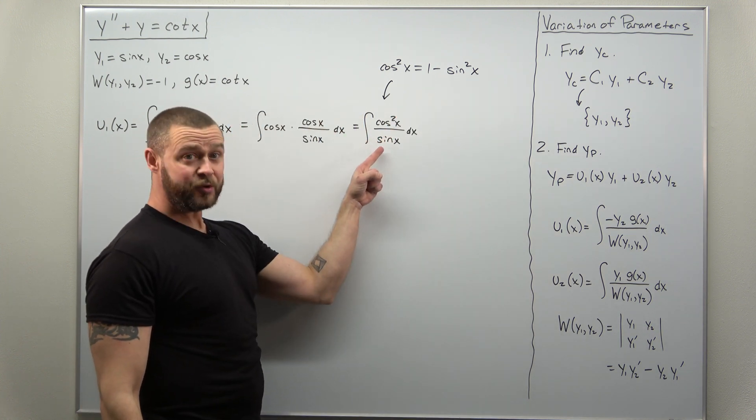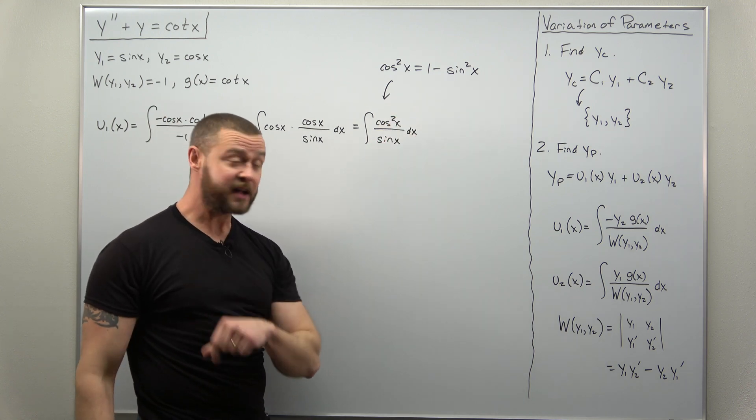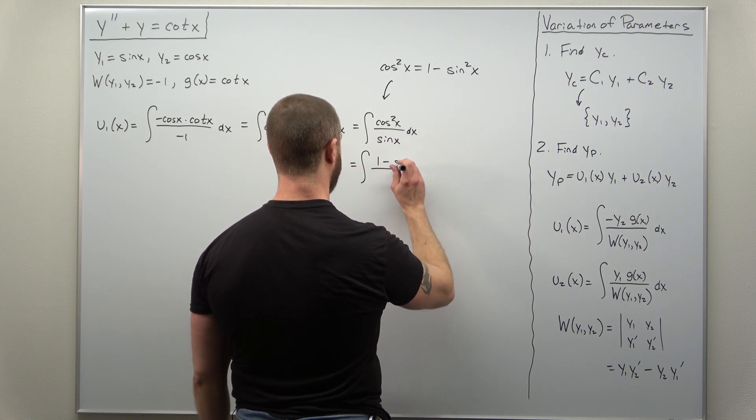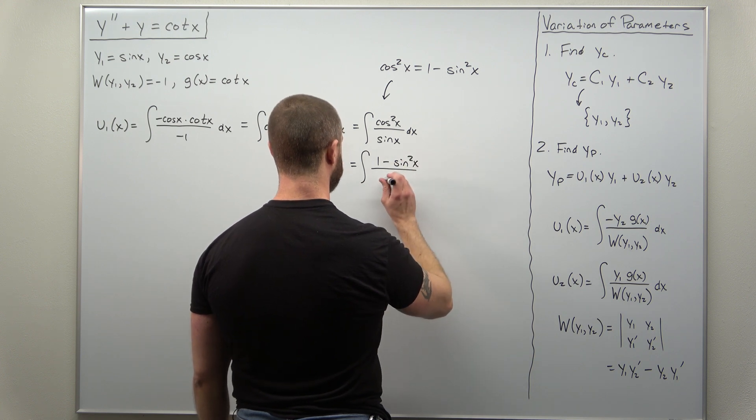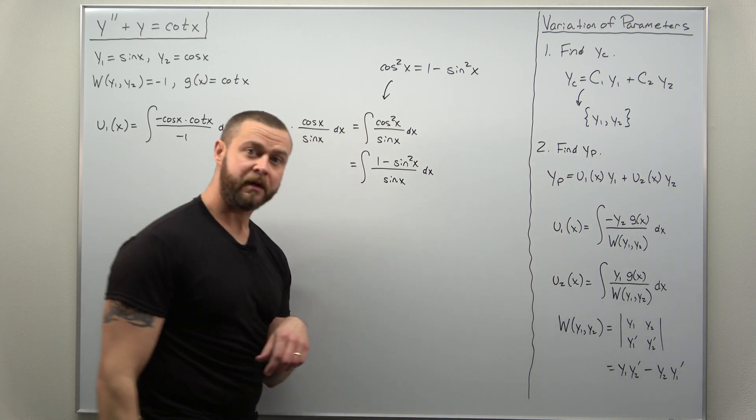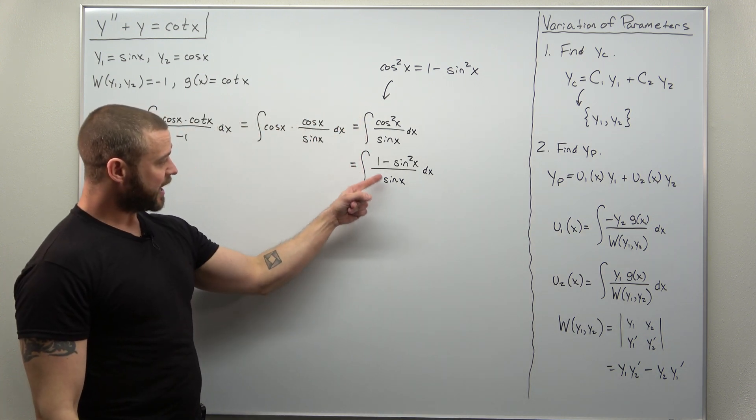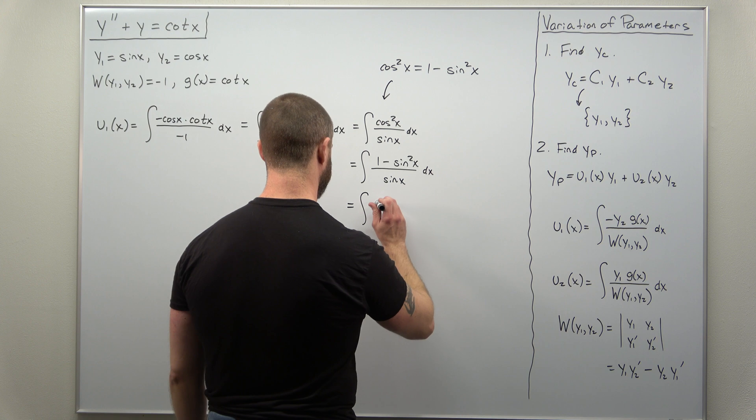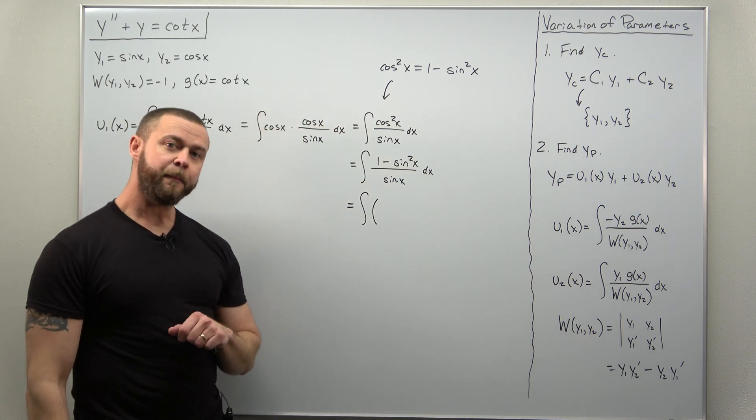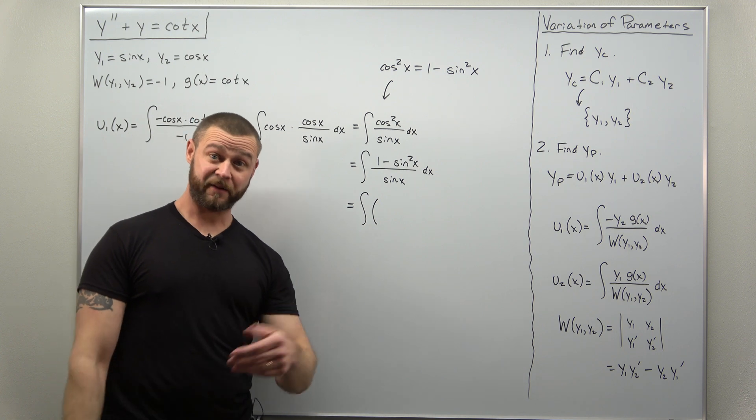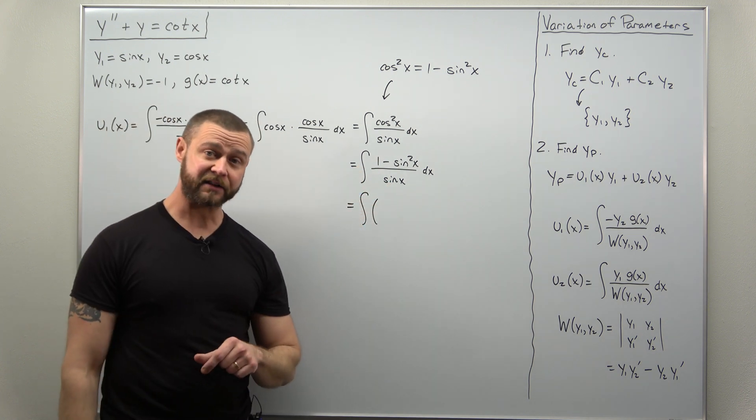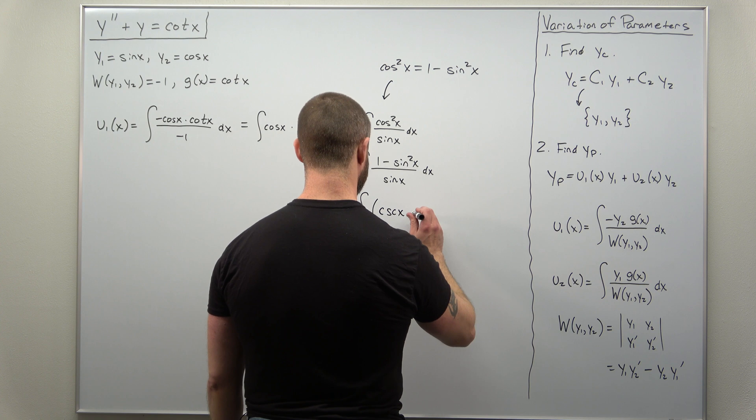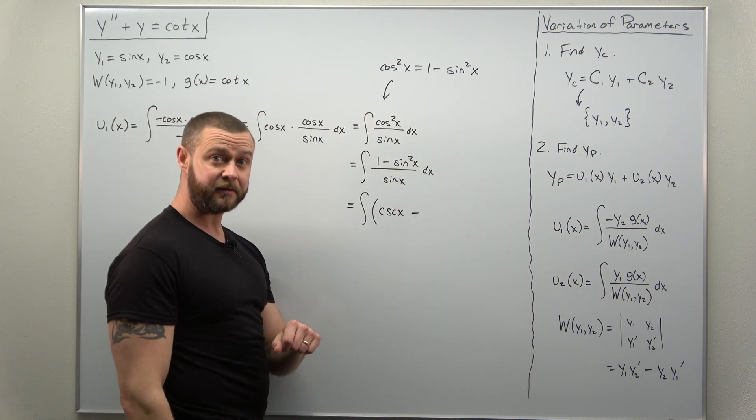So let me rewrite cosine squared as one minus sine squared. And notice, if I do that, sine squared divided by sine, I can cancel a factor out. So let me go ahead and write this as the integral of, in the numerator, one minus sine squared. We're dividing by sine of x. And I'm going to divide sine, your denominator, into each term in the numerator. And if you think about basic trig functions, going all the way back to when you first learned about them, one over sine of x - that is cosecant of x. And sine squared divided by sine is just sine of x.